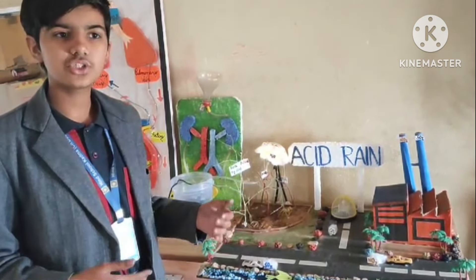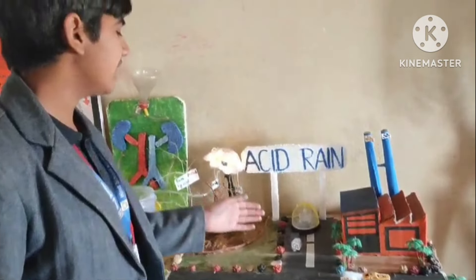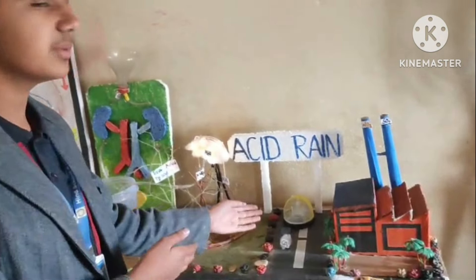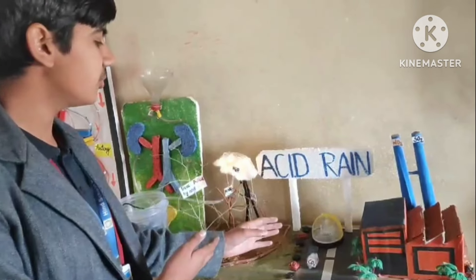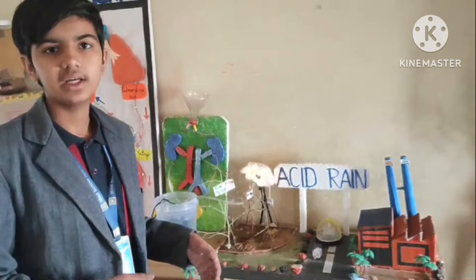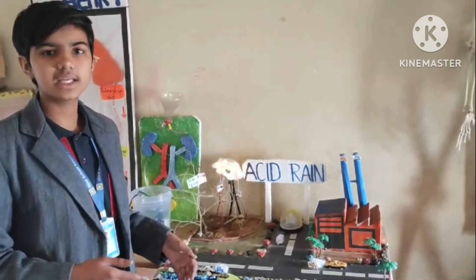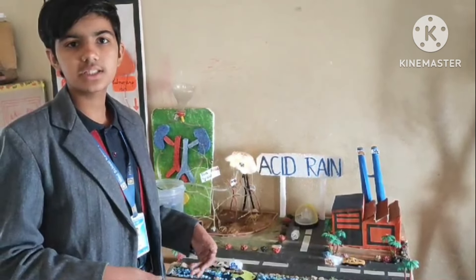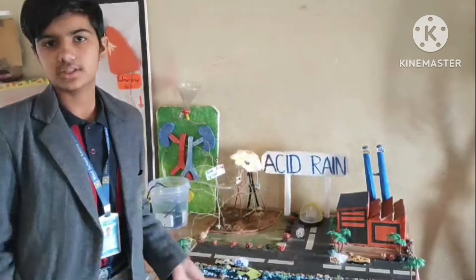That is corrosion of marble. Nowadays, the whiteness of the Taj Mahal is vanishing and it is becoming yellowish. This is also a result of acid rain. It causes a great imbalance in our ecosystem which is greatly dangerous for us.